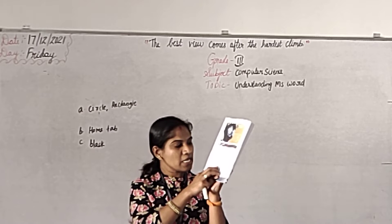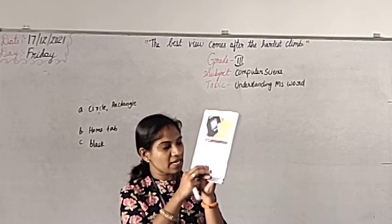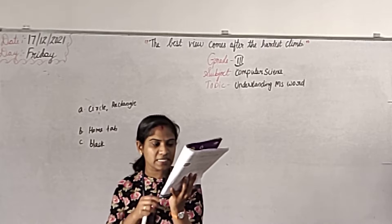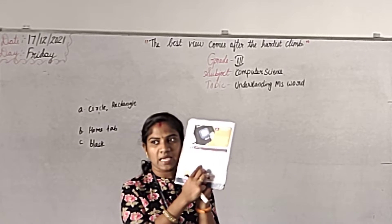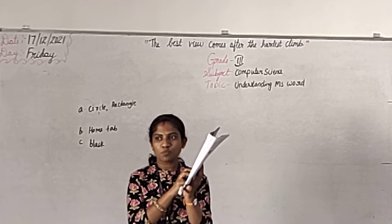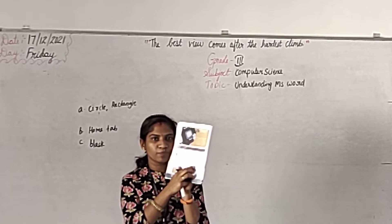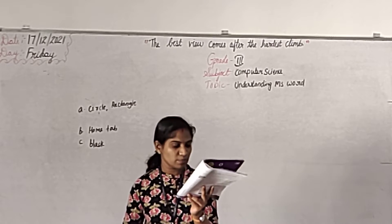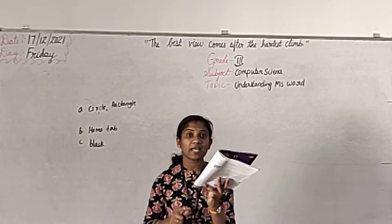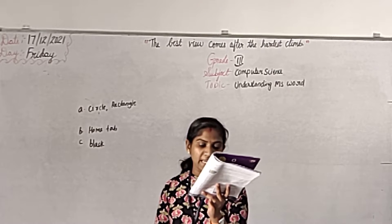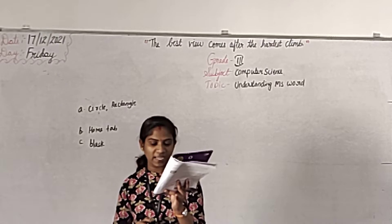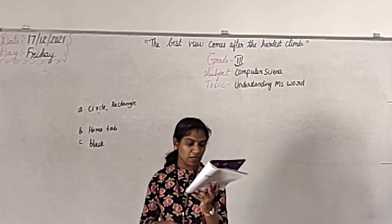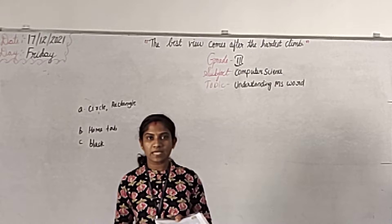Recycle Bin: Recycle Bin is a storage area of deleted files and folders. Match it. Then Hard Disk: Hard Disk is a storage device. Then Spacebar: Spacebar is the space between two words. Match it. So: Notepad is a text editor; Mouse is a pointing device; CPU is the brain of a computer; Recycle Bin stores deleted files and folders; Hard Disk is a storage device; Spacebar is the space between two words.